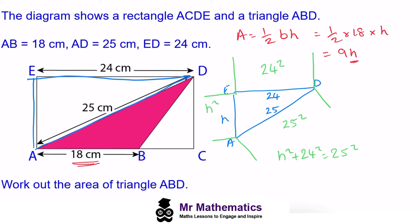We can make the height the subject of this equation by taking away 24 squared from both sides, so the height squared will be 25 squared minus 24 squared. This works out to be 49, so the height squared is 49. If we square root this, the height will be 7. So the length of A to E is 7 centimeters.